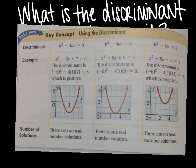If your discriminant is greater than zero, you will have two real solutions. If it equals zero, there's going to be one solution. And if it's less than zero, there are no solutions.